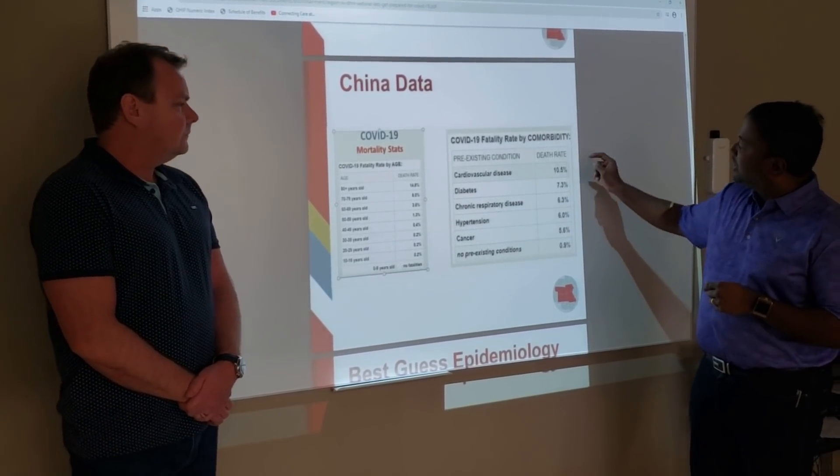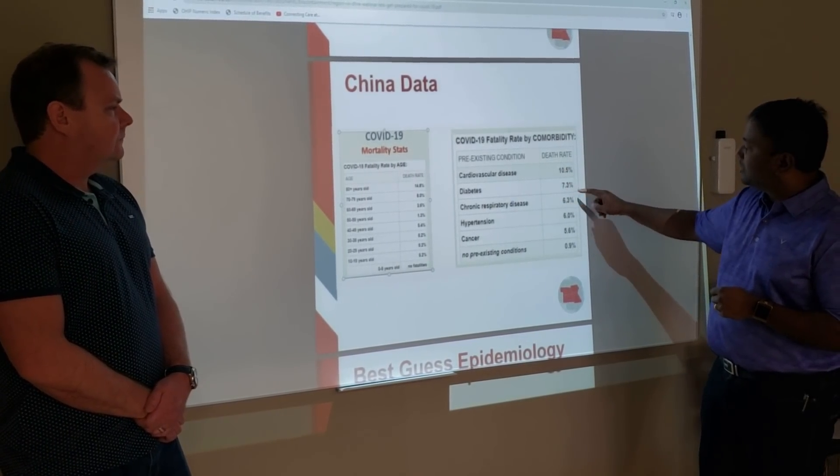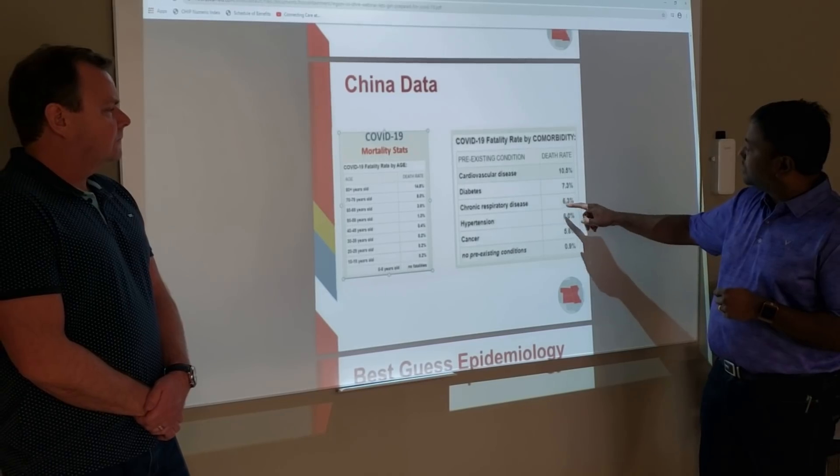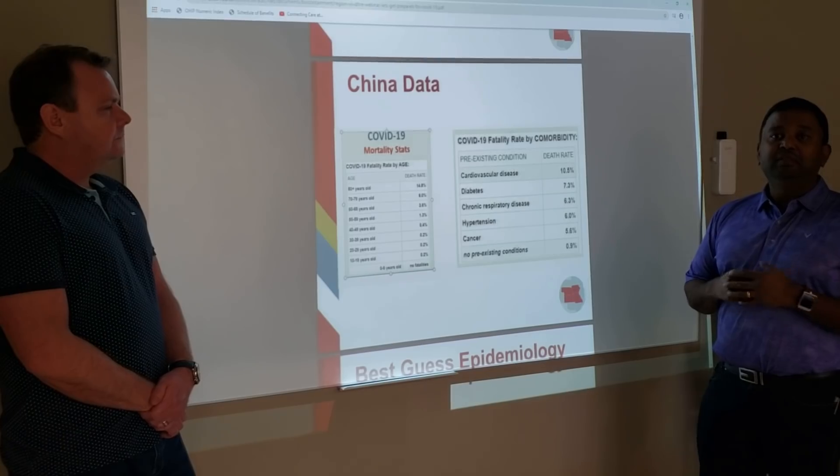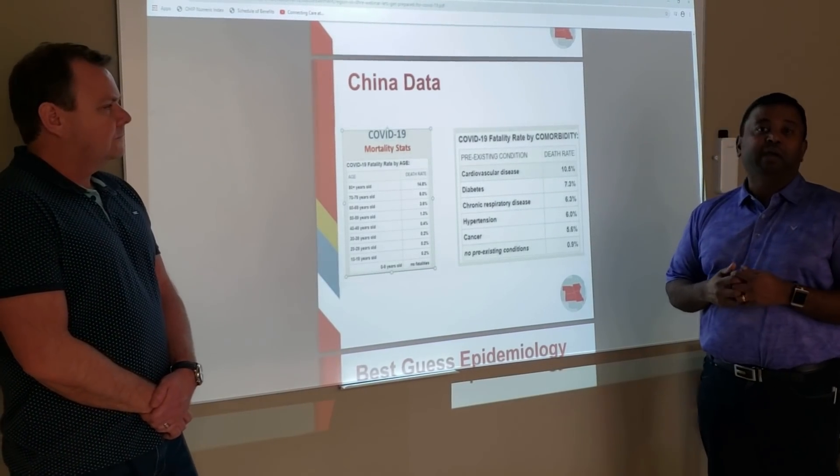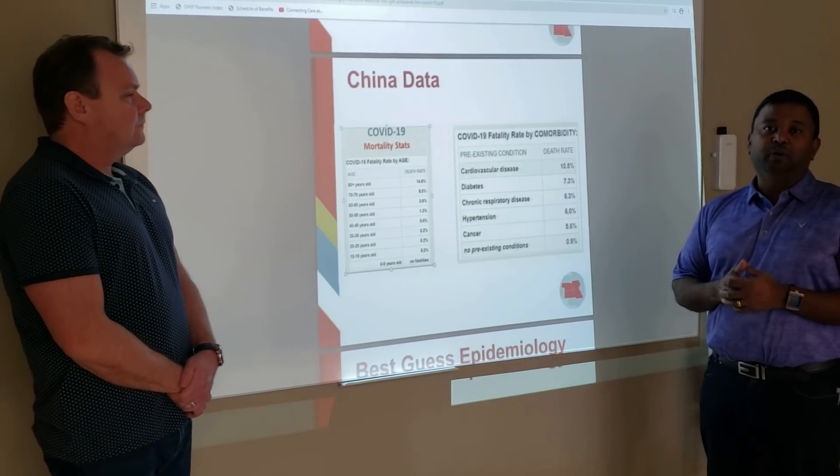We're looking at people with cardiovascular disease with a death rate of 10.5%, diabetes 7.3%, chronic respiratory disease rate of 6.3%, hypertension of 6%, and some with cancer of 5.6%. These are the vulnerable patients in our practices, in our population, in our community. These are the people that we are really worried about.